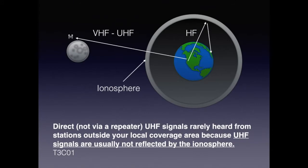Some portions of the radio wave spectrum behave differently in the ionosphere. While HF signals are reflected back to Earth, VHF and UHF pass right through. For this reason, the higher portions of the UHF band are preferred for communications with satellites in orbit and probes sent to outer space by space agencies. For the examination, know that direct UHF signals are rarely heard from stations outside your local coverage area because UHF signals are usually not reflected by the ionosphere.